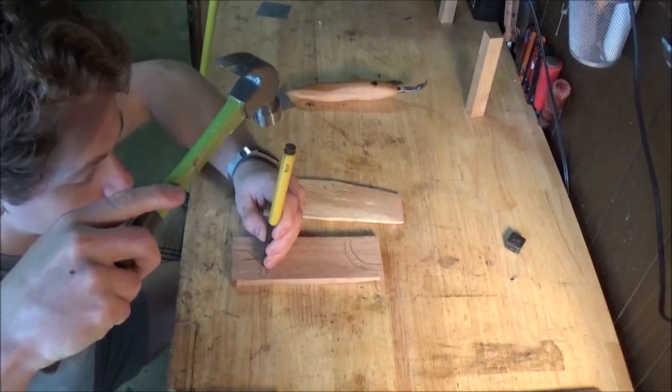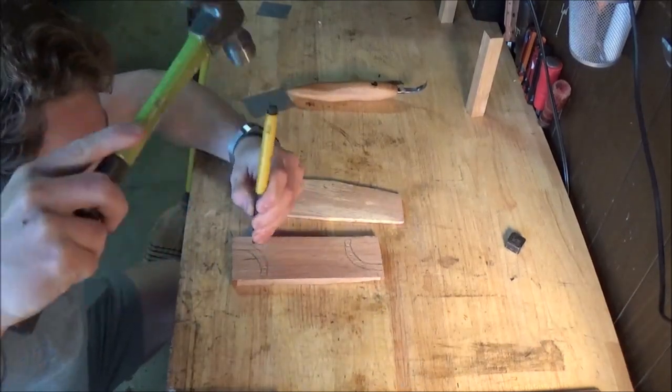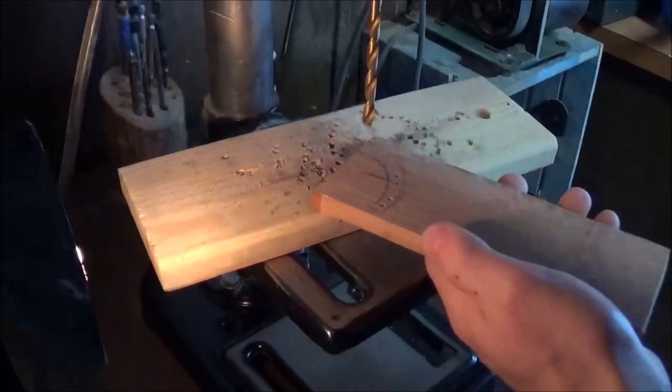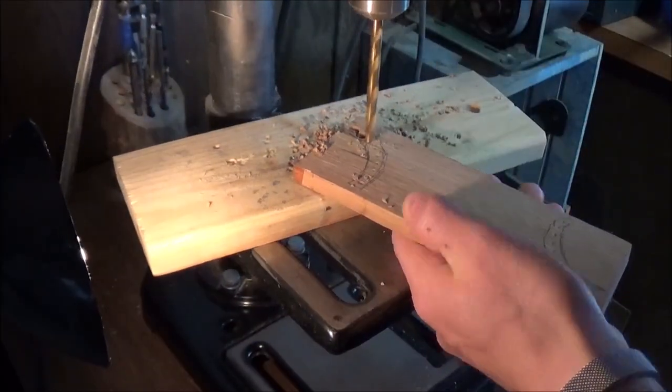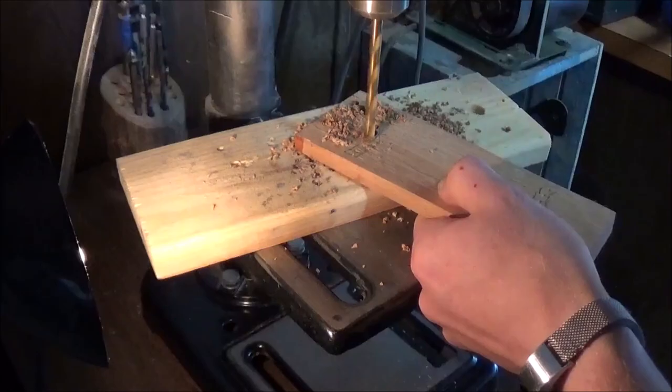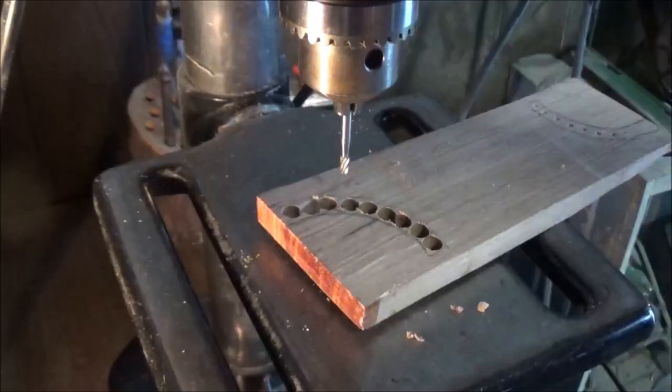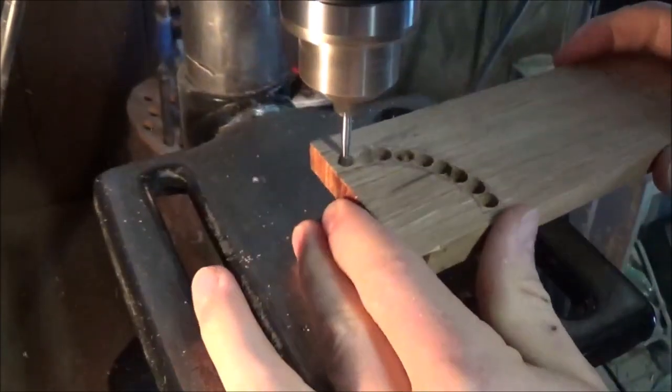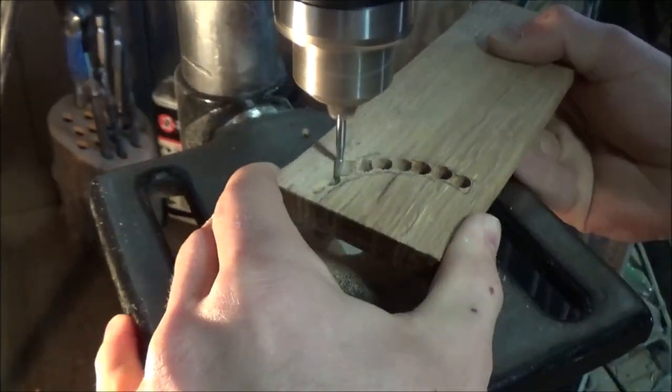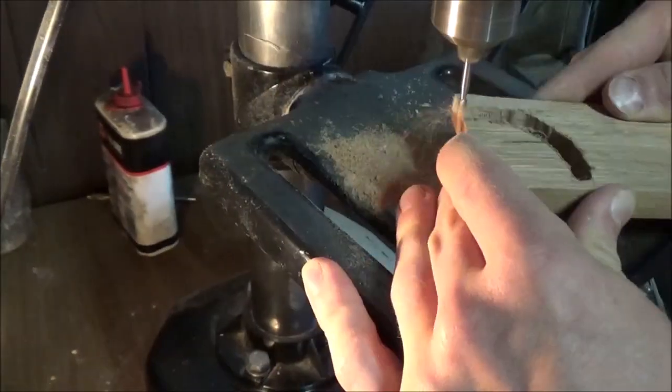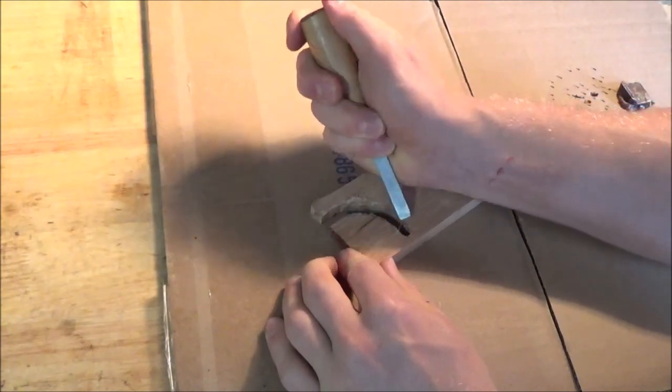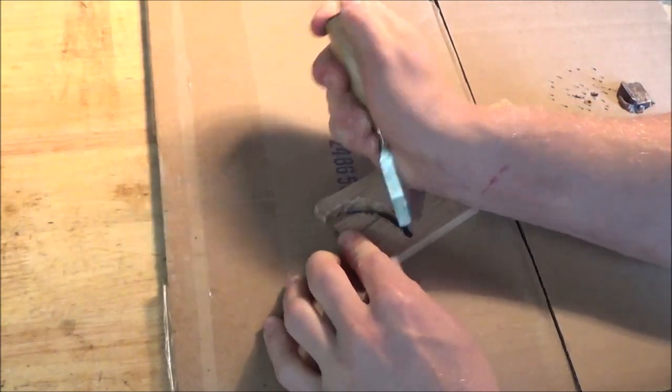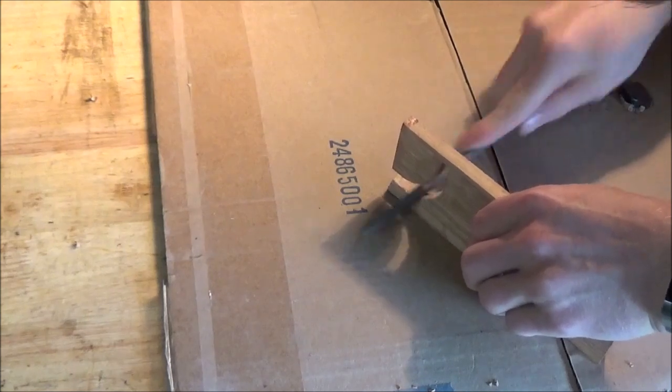I'll start by tracing the outline of my hook on some wood that I milled up a while ago, and then I'll drill out that shape. The drill is mainly just to get rid of a lot of material, and then I'll go back with a Dremel, almost like a routing bit, and clean up that shape. Then I'll clean up the edges with a chisel and clean up the inside with some files.